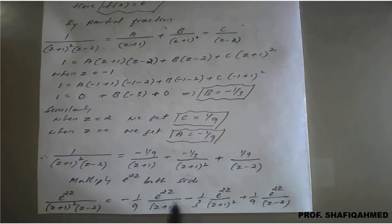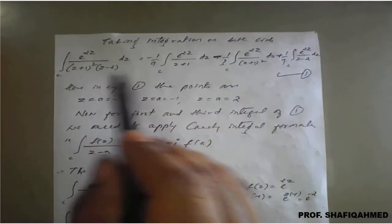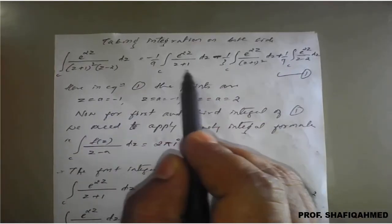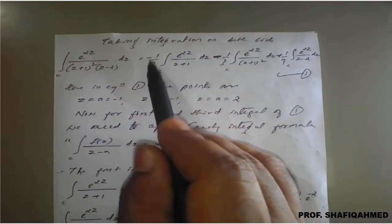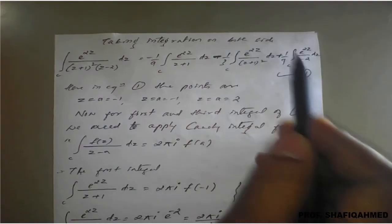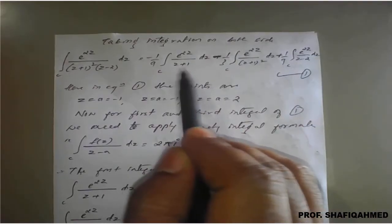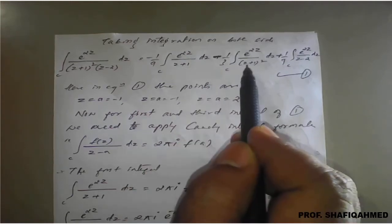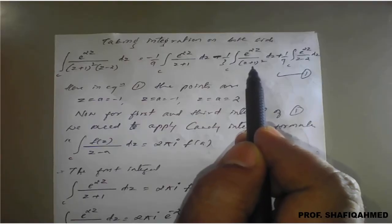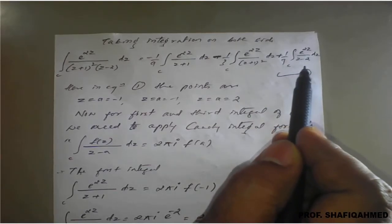Once we get this, we integrate both sides. Taking integration on both sides we will get this formation. On the right hand side of this equation we have three integrals: first, second, and third. Each integral has a different pole. For z plus 1, the value of a is minus 1; for z minus 2, the value of a is 2.